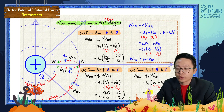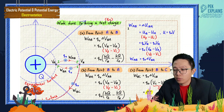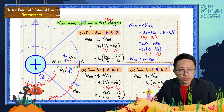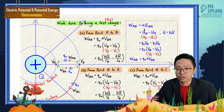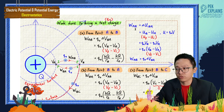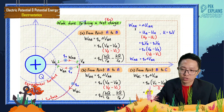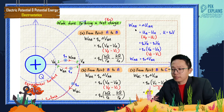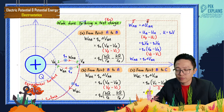Let us continue with work done to bring a test charge from one point to another point. Work done is actually change of potential energy — delta U. When you do some work, you either increase or decrease the electric potential energy. Work done is like transferring energy into the test charge, and its unit is joules, same as delta U.